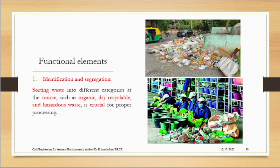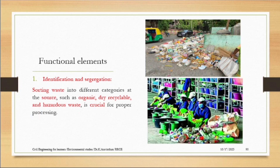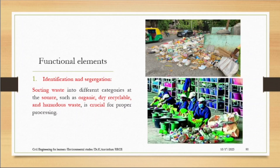Now, what are the functional elements? It is a process. The first is identification and segregation. These are the sources of identification — they have to identify and pick up the waste. After that they have to segregate: separate in terms of plastics, paper, non-biodegradable, chemical waste, toxic waste, and glass items. Glass items can be recycled; paper waste can be decomposed. This sorting process is called segregation.